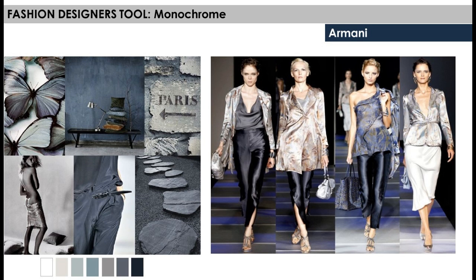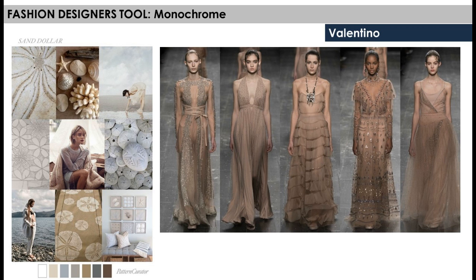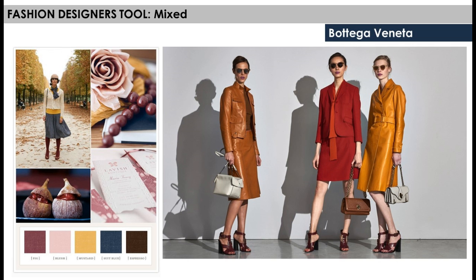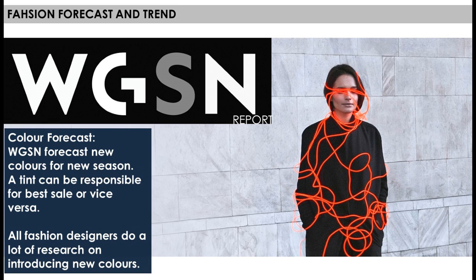Let's look at some examples. Armani uses a monochromatic blue color palette. Valentino uses a monochromatic earthy color palette. Bottega Veneta has a mixed color palette, as does Vionnet. Now we are going to talk about color forecasting.